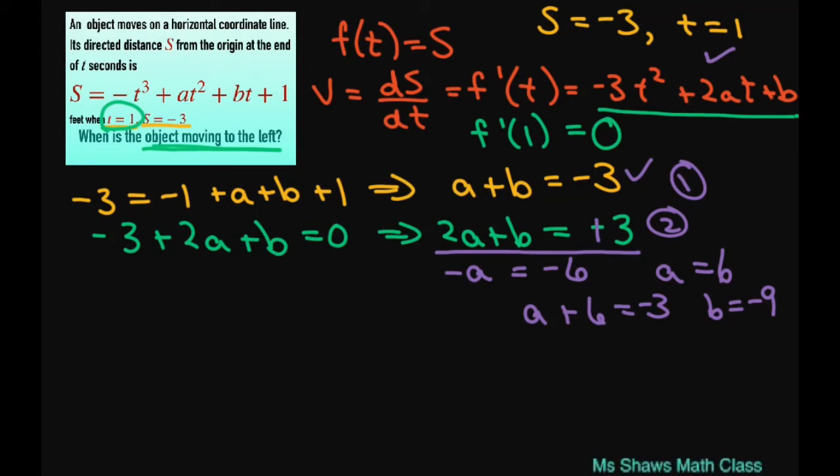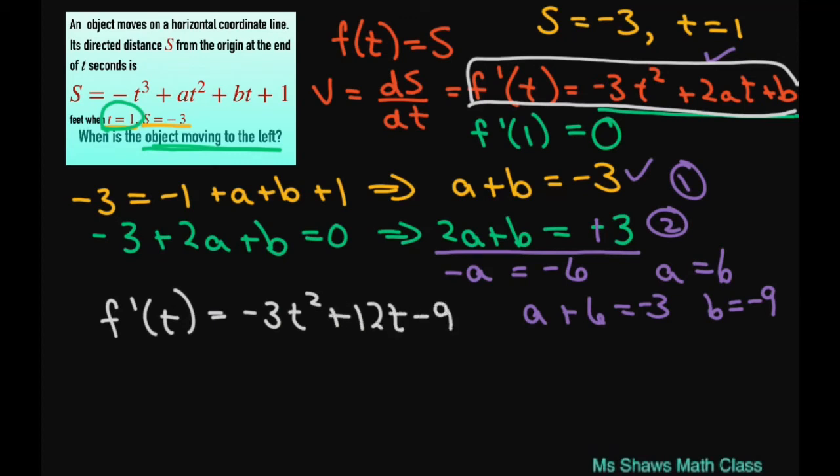Since we have that, we can substitute everything in. Looking back at this equation, f'(t) equals negative 3t squared plus 12t minus 9. Factoring this, let's factor out negative 3. That gives you t squared minus 4t plus 3. Factoring further, you get negative 3 times (t minus 3) times (t minus 1).